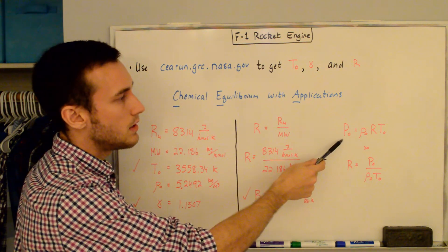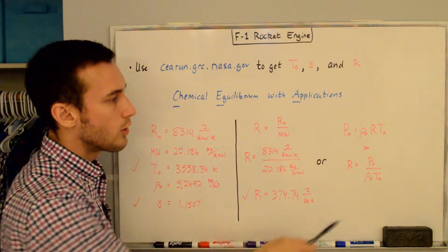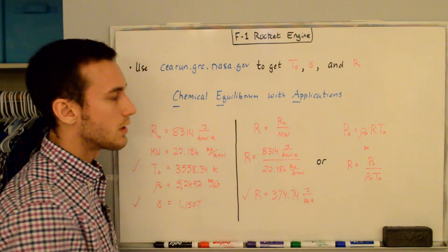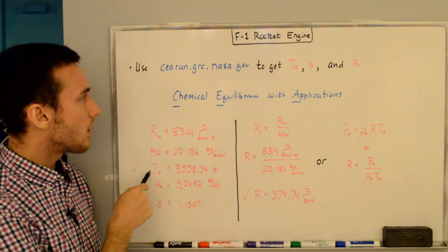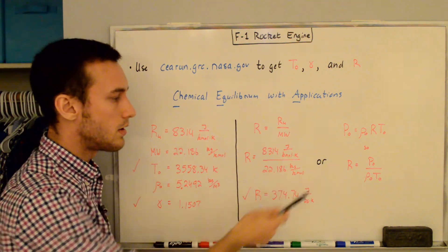We can also use the ideal gas law, P naught equals rho naught R T naught. Rearrange for R, get P naught over rho naught T naught. Since we have rho naught and T naught, and we also have P naught from the givens, we can compute R, and you get the same thing.